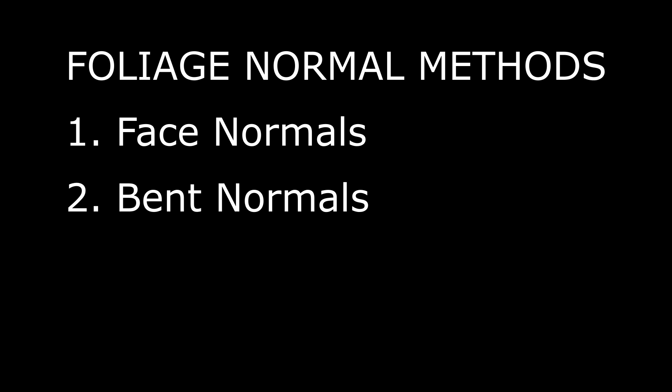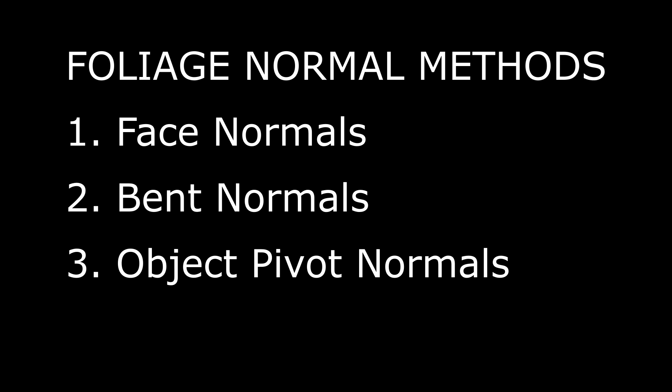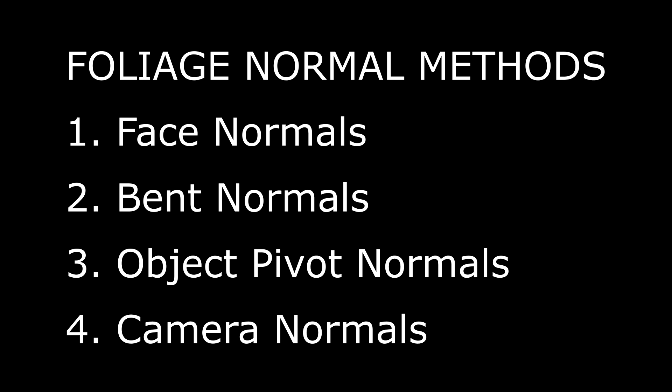Our four methods for foliage normals are: number one, face normals; number two, bent normals; number three, object pivot normals; and number four, camera normals. We're going to go over how to create each of these types of normals and talk about the positives and negatives for each, and at the end we might just throw in one more way to create foliage normals for good measure.